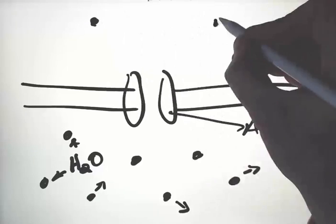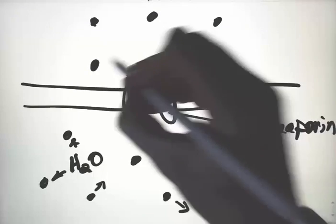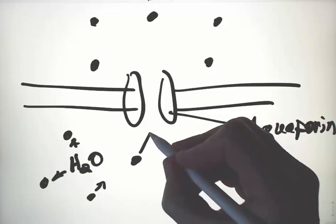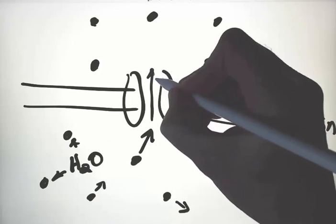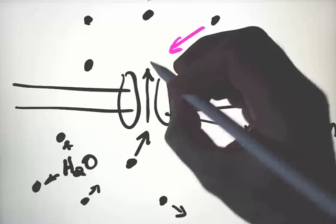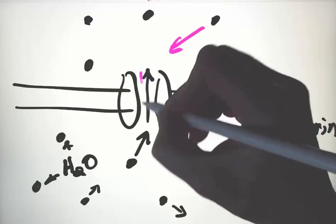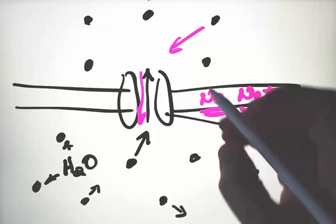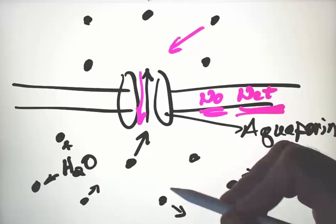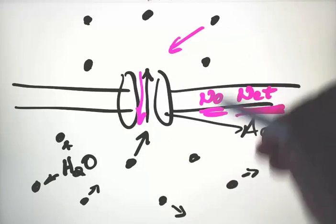If we have the same number of water molecules on each side of this membrane, then the probability of a water molecule hitting the aquaporin and moving through in one direction is equal to the probability of a water molecule hitting from the other direction and moving through. There will be no net movement. Water molecules moving in both directions, but never any change in the proportion on both sides.